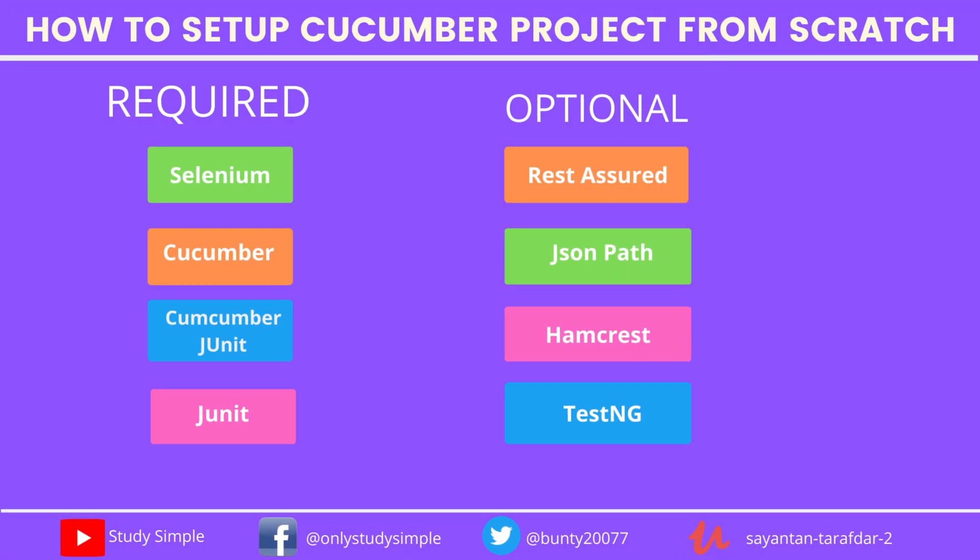There are a couple of required dependencies and optional dependencies. The required dependencies are Selenium, Cucumber, Cucumber JUnit, and JUnit. The optional ones are Rest Assured, JSON Path, Hamcrest, and TestNG. There can be more required and optional dependencies — we will learn about those during hands-on — but overall these are the main dependencies that you need to add to create the skeleton of the project.